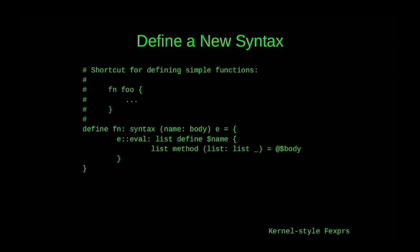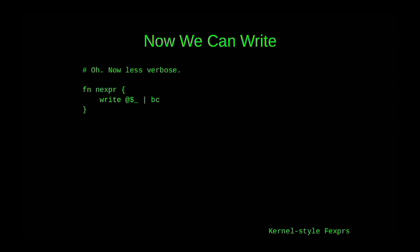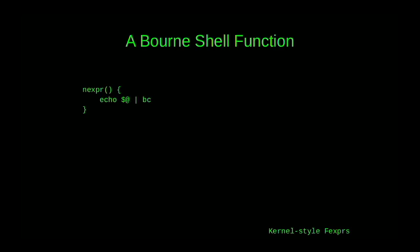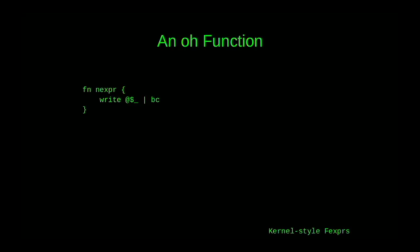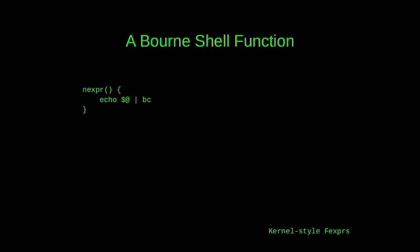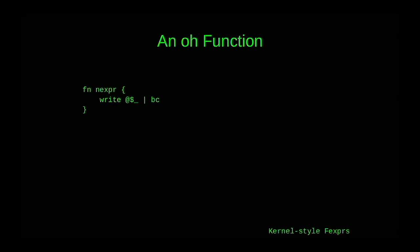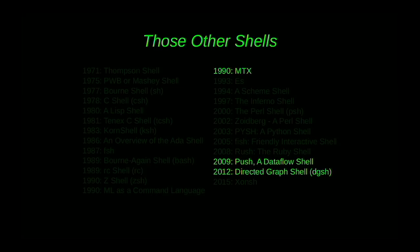The syntax was a bit verbose, but we can define new syntax if we're embarrassed by that. In O, we can define a function that works like a Bourne shell function — taking a magic parameter without declaring it, just a name and a block of code. We define the syntax to take a name, a body, and the calling environment. With that, we can define something very close to the Bourne shell equivalent. The O version is off by just about one character from the Bourne shell declaration. This shows how very malleable the syntax is.